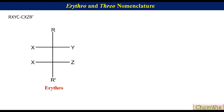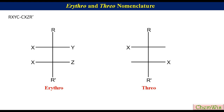Y and Z may be the same or different. For drawing the threo diastereomer, draw an 'A' skeleton for the Fischer projection, put R and R' on the vertical lines, place the same groups X on opposite sides, and Y and Z on opposite sides too. From these structures we can see that erythro and threo are not mirror images, and thus these are two diastereomers.